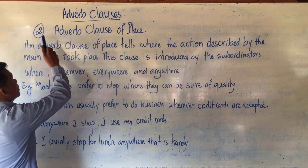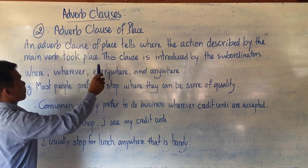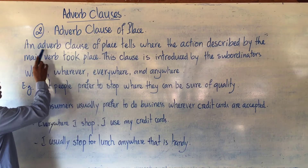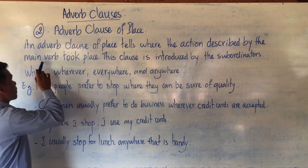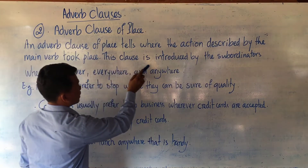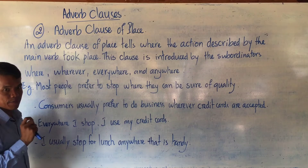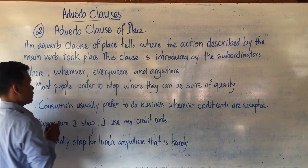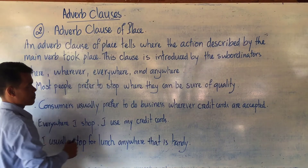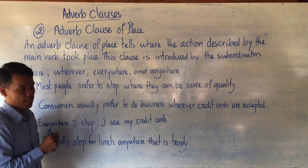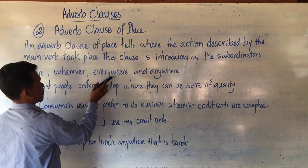Adverb Clause number two: Adverb Clause of Place. First, you have to take a look at the definition. An Adverb Clause of Place tells where the action described by the main verb takes place. This clause is introduced by the subordinators: where (which refers to a definite place), wherever (any place), everywhere (every place), and anywhere.